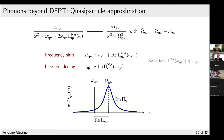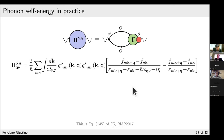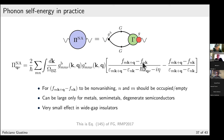The phonon self-energy expression is analogous to the electron case: it contains electron-phonon matrix elements squared, occupation factors, and energy denominators. Importantly, the expression requires one electronic state to be occupied and one to be empty — you cannot have both occupied or both empty. This means the non-adiabatic phonon self-energy is negligible for wide-gap insulators and large-gap semiconductors, and is only important for metals, semimetals, and narrow-gap semiconductors.